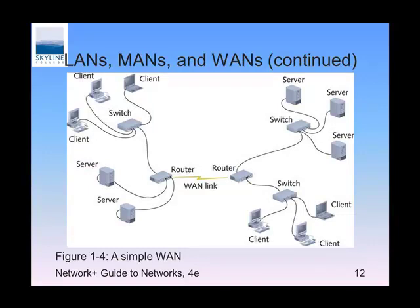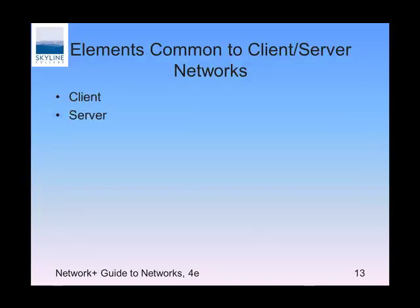A WAN link — there's a symbol here that looks like wireless but is actually the symbol for a serial link. We'll look at serials: what speeds do they go, what kind of connector are we using. Routers define networks and connect networks together. These routers are connected together so we can connect the networks together, and you'll do a lot more of that in the routers classes.